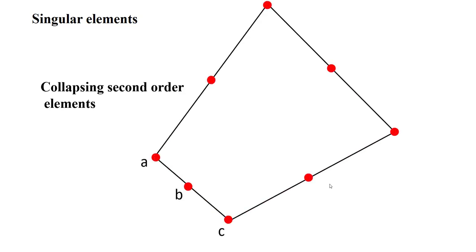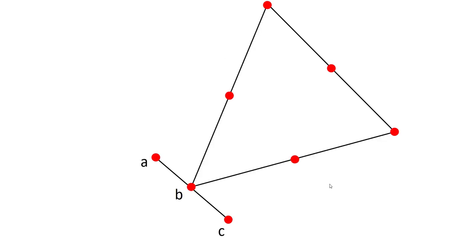For accurate modeling of singularity, we should use singular elements. We can construct singular elements by collapsing second-order elements as follows. We have a second-order element. At first, we collapse one side of the element. The collapse side is located at the crack tip.